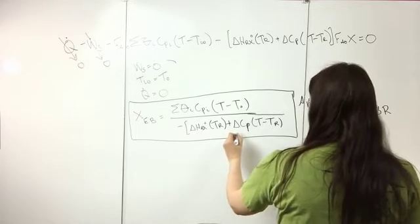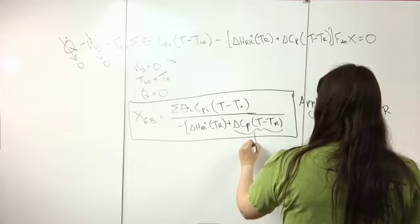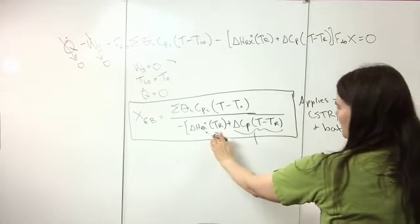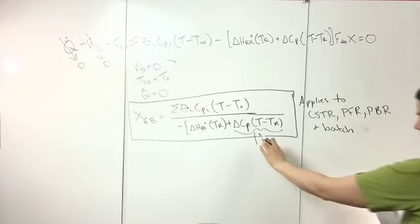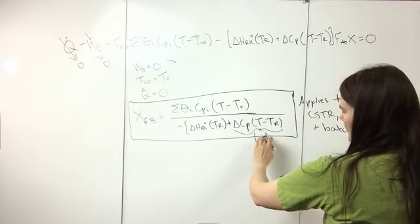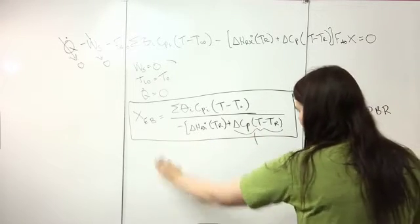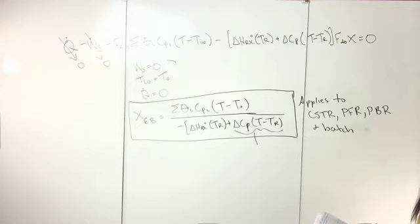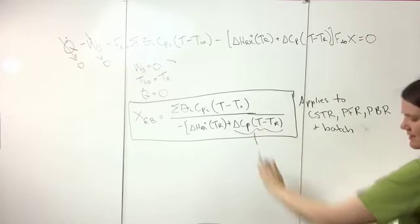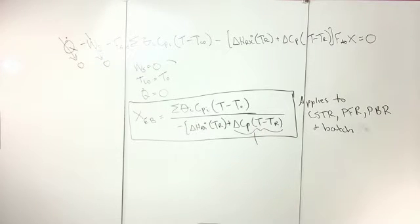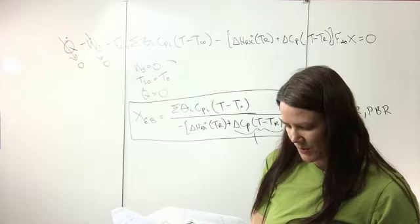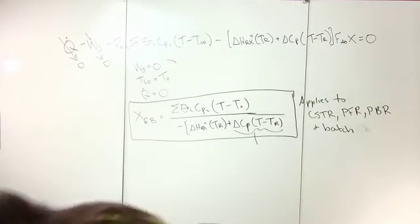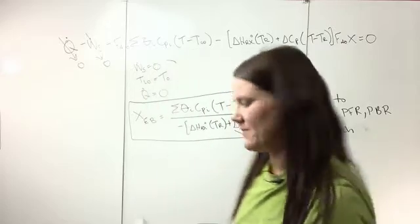Another assumption that's often made is that the delta C sub P term is often negligible because it's usually really small compared to the other term. If this term is negligible, then the plot of temperature versus conversion will be linear. The equation in Table 8-1 assumes that delta C sub P is zero, so make sure it is zero if you're using that equation.